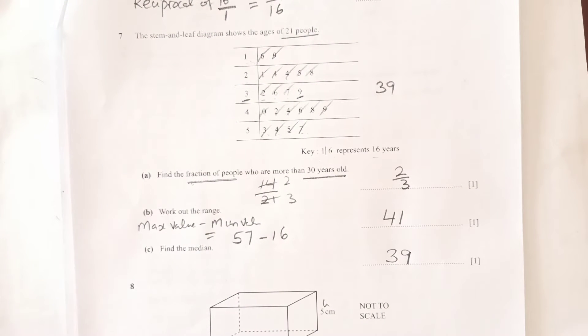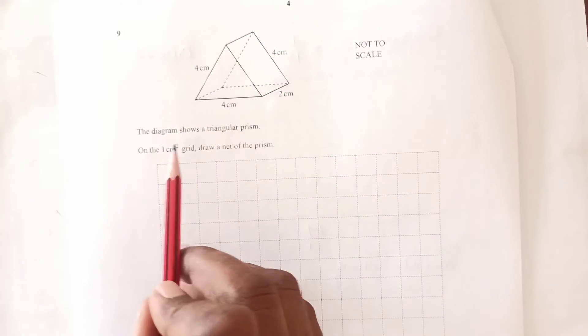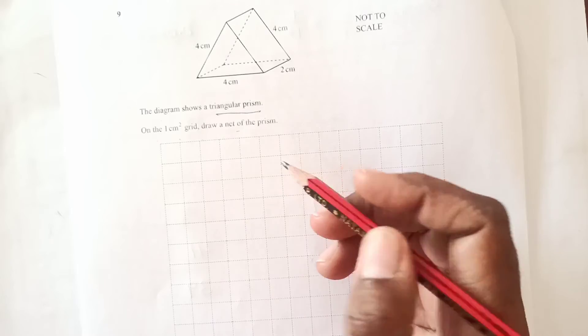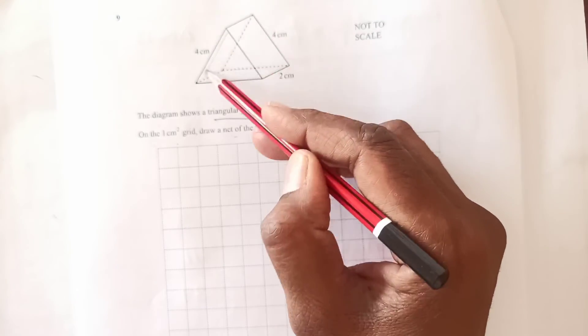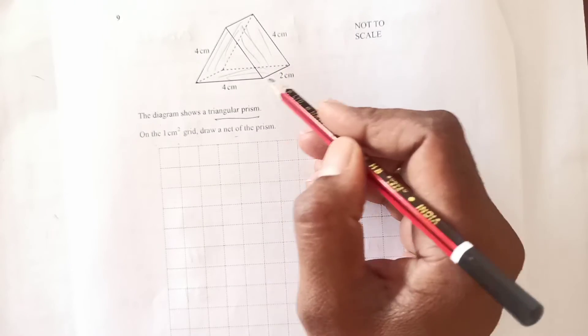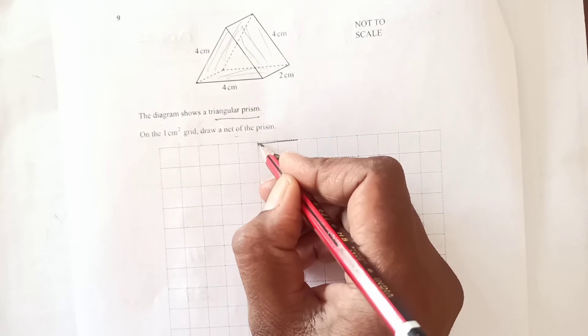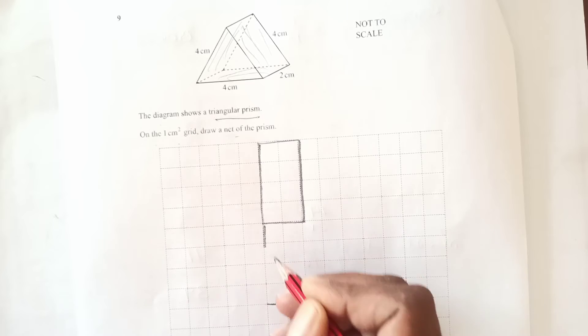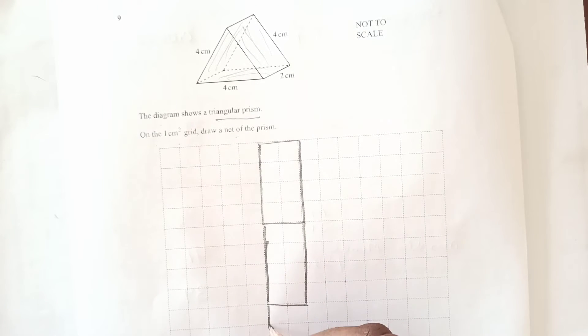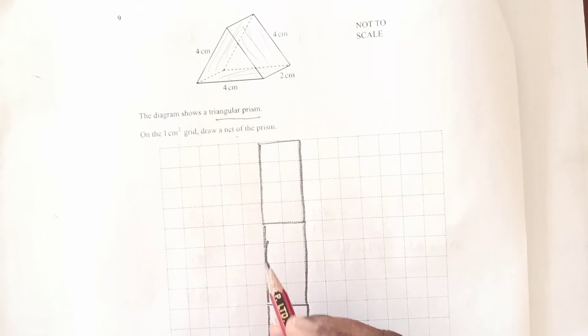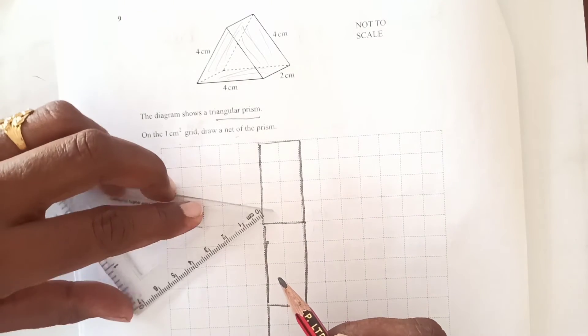Question 9: the diagram shows a triangular prism on a one centimeter square grid. Draw the net of the prism. The net is like a 2D diagram that when you fold it becomes 3D. We have three rectangles and two triangles. First we draw three rectangles which are 4 by 2. One rectangle, two rectangles, three rectangles.